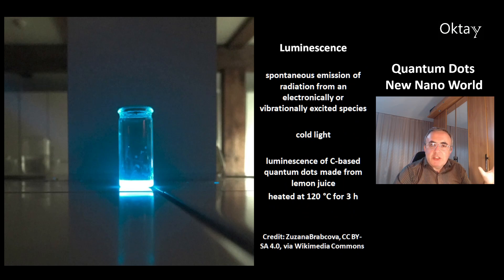This is a picture of luminescence. That's the spontaneous emission of radiation from an electronically or vibrationally excited species. This is a cold light. And in this picture you can see a luminescence of carbon-based quantum dots that are made from lemon juice. Lemon juice is heated for 3 hours at 120 degrees Celsius. And that's how you make these carbon-based quantum dots.